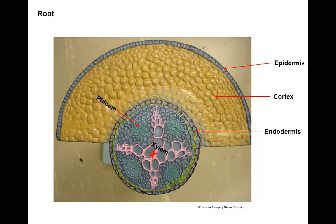Here is a model of a cross-section of a dicot root. You see here the epidermis making up the dermal tissue, a ring of ground tissue known as the cortex, and a cylinder made up of a single ring of cells called the endodermis. The vascular tissue is found in the center of the root — xylem is set up in an X formation and the phloem lies in the axils of the xylem.